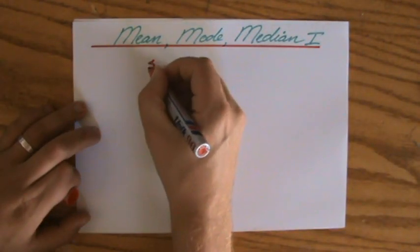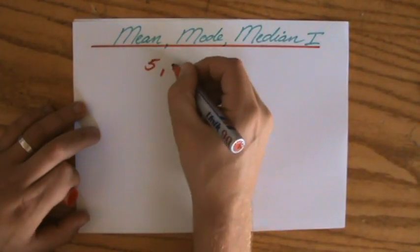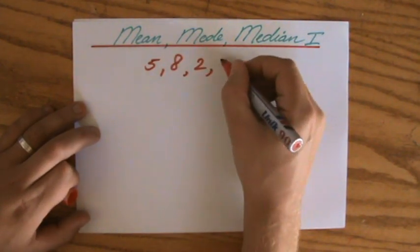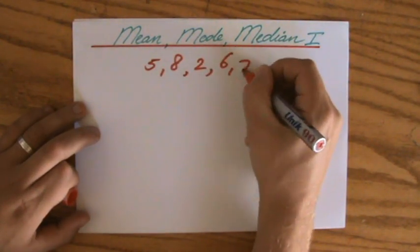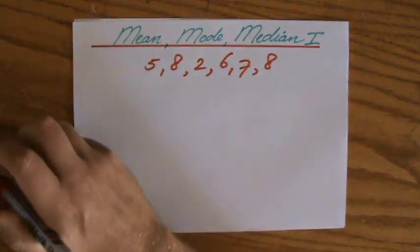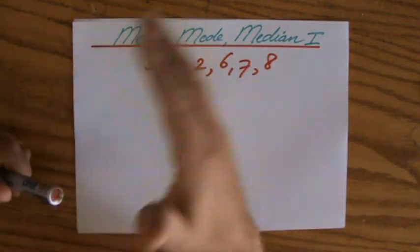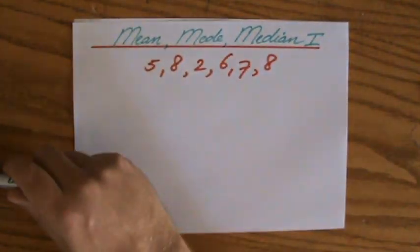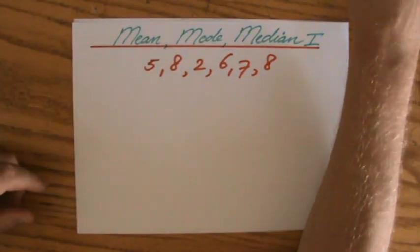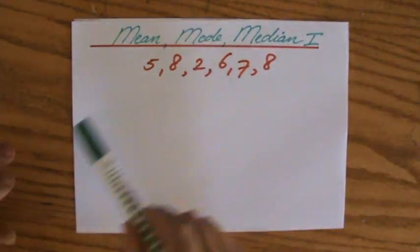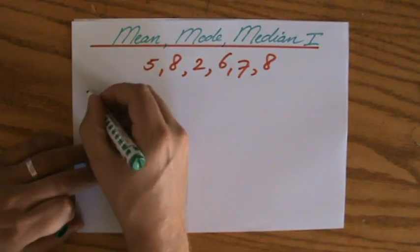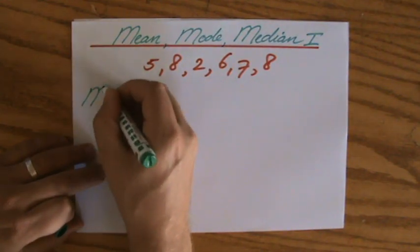Let's say I have a set of data: five, eight, two, six, seven, and eight. This could be your math scores or perhaps the amount of goals scored in each football game — it doesn't really matter. This is just for our understanding of what the mean, mode, and median are.